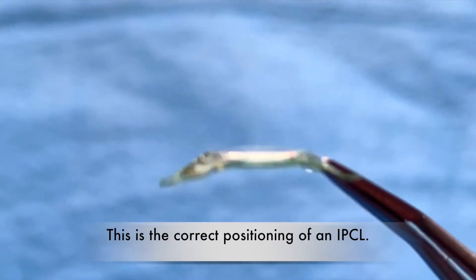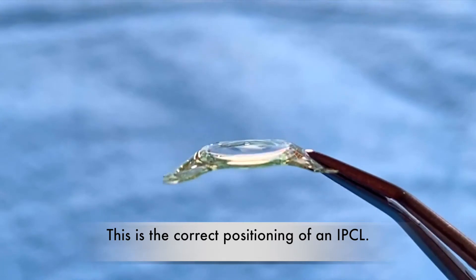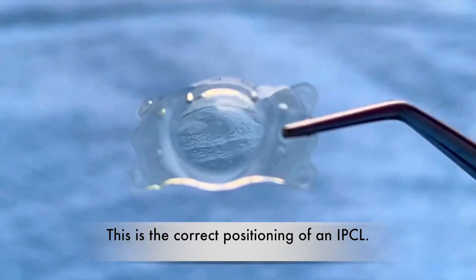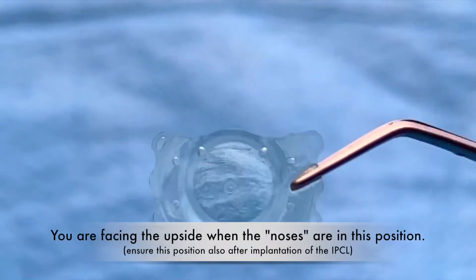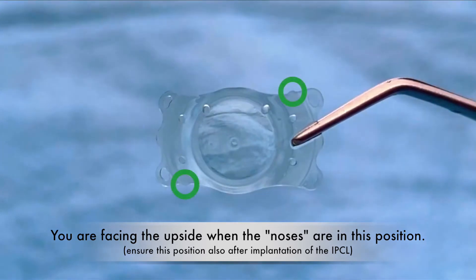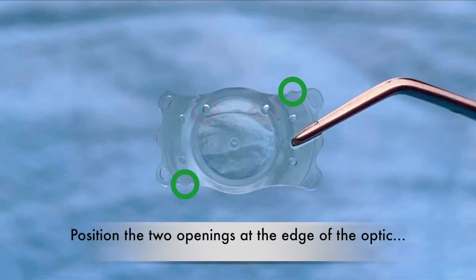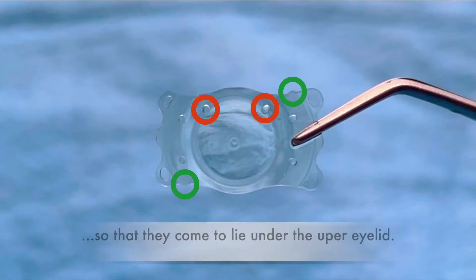This is the correct positioning of an IPCL. You're facing the upside when the noses are in this position. Ensure this position also after implantation of the IPCL. Position the two openings at the edge of the optic so that they come to lie under the upper eyelid.